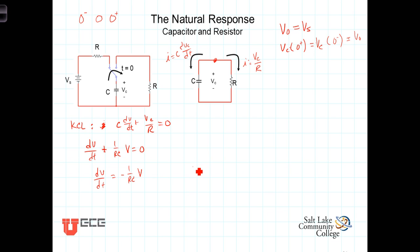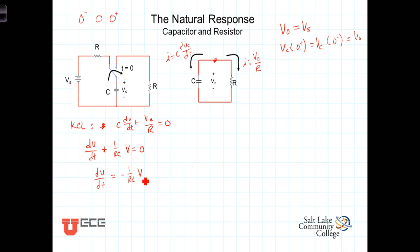Let's look at this for just a second. What this is saying is that the rate at which the voltage across the capacitor is changing is proportional to the voltage, where the proportionality constant is 1 over RC. The bigger the voltage, the larger V, the greater the change will be. As V gets smaller and smaller, the rate at which the voltage is changing is also getting smaller.